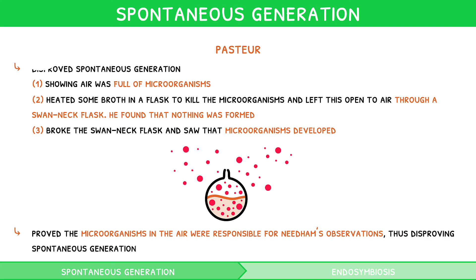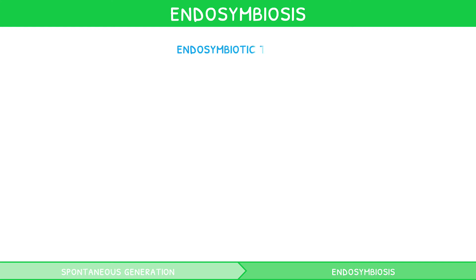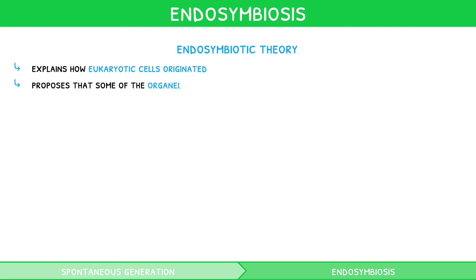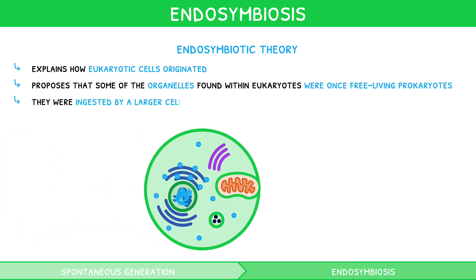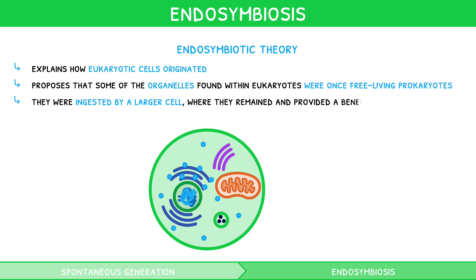The IB syllabus also explores one other form of cell theory. This is known as the endosymbiotic theory, and it explains how eukaryotic cells originated. This theory proposes that some of the organelles found within eukaryotes were once free-living prokaryotes that were ingested by a larger cell, where they remained and provided a benefit, causing the larger cell to eventually become a eukaryote.